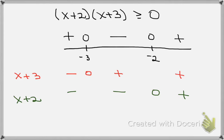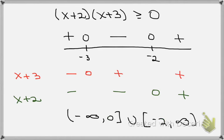Looking at the top of the number line, we can easily identify the regions where the product of the two factors is greater than or equal to zero. Those intervals are from minus infinity to minus 3, with minus 3 included because it equals zero there, union with the interval from minus 2, included, to infinity. This is how you determine the solutions to a quadratic inequality.